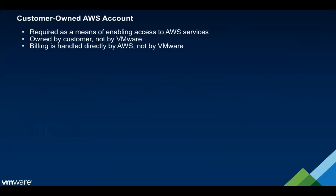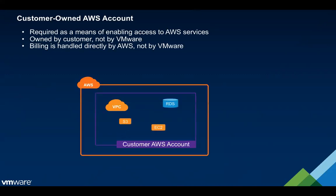The first topic is the customer-owned Amazon account. One of the major value propositions of this service is that we are deployed directly in Amazon facilities, and so we wanted to provide our SDDCs with access to Amazon services. However, we didn't want to become the billing entity for that process. The first prerequisite is that you have your own customer-owned Amazon account, where all Amazon services will reside. The SDDCs are not deployed within this account — they are deployed in a VMware-owned Amazon account, and we simply link into your Amazon account.